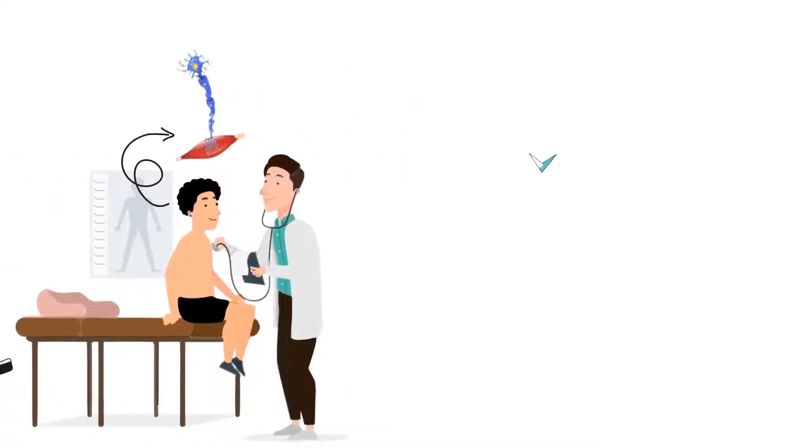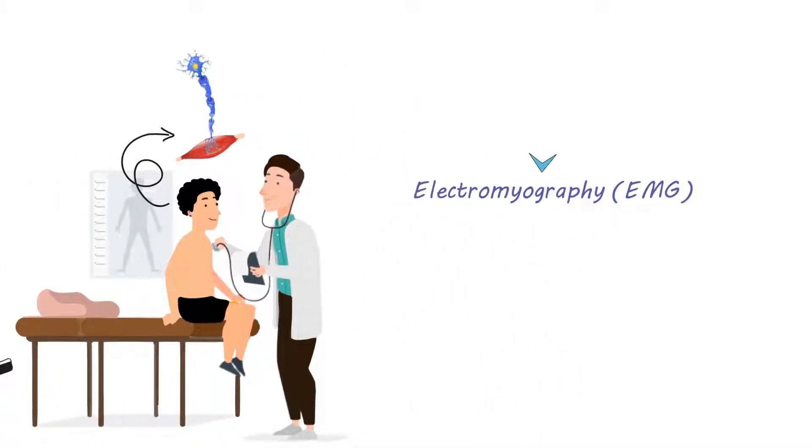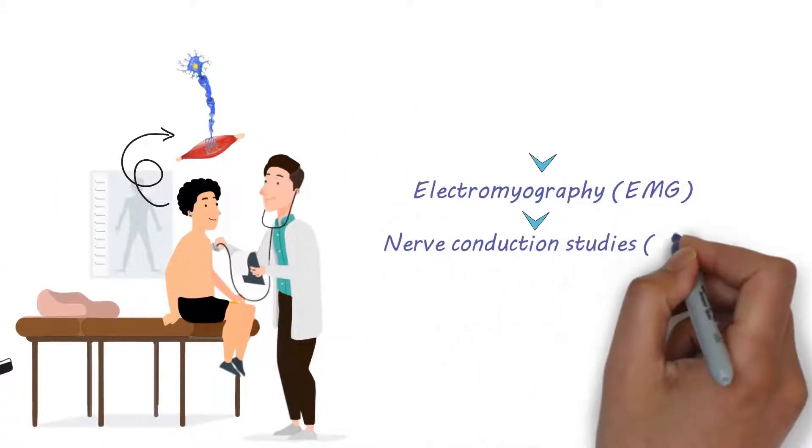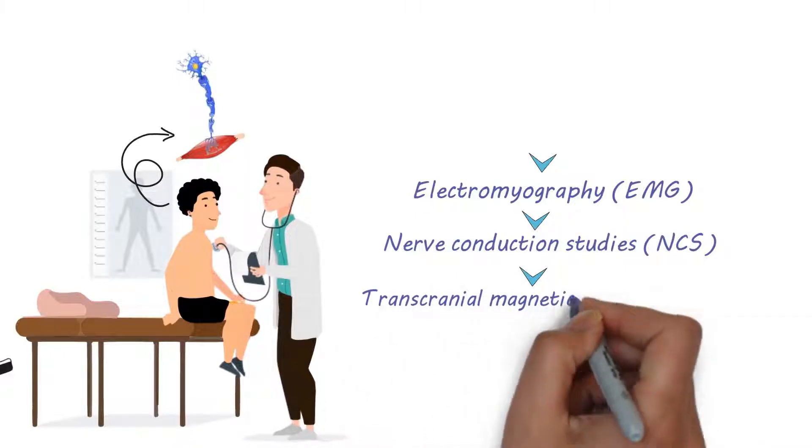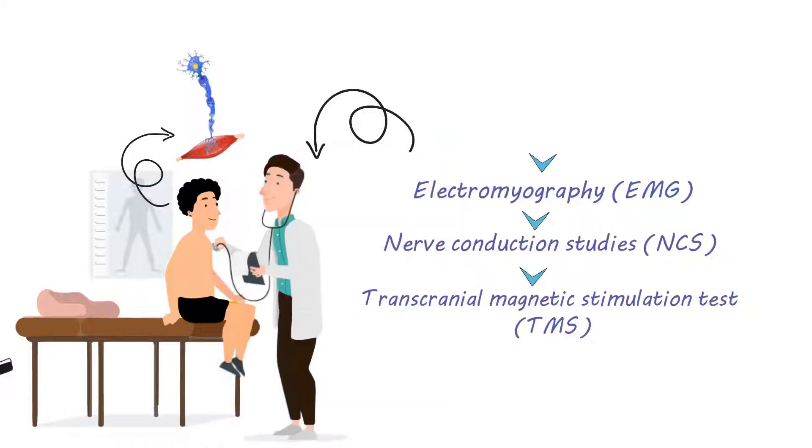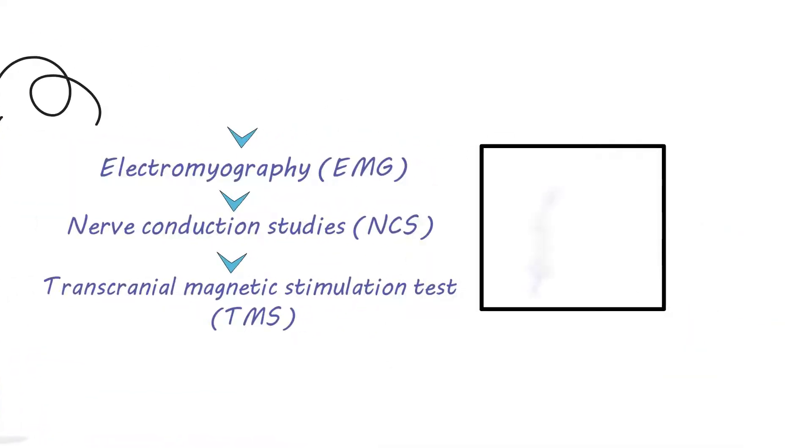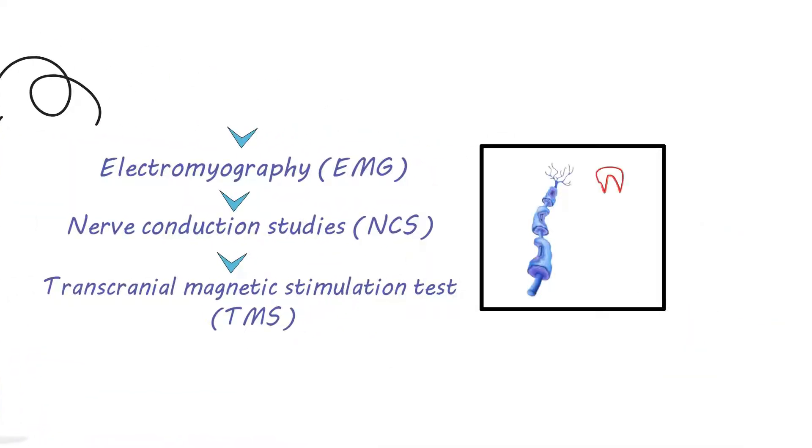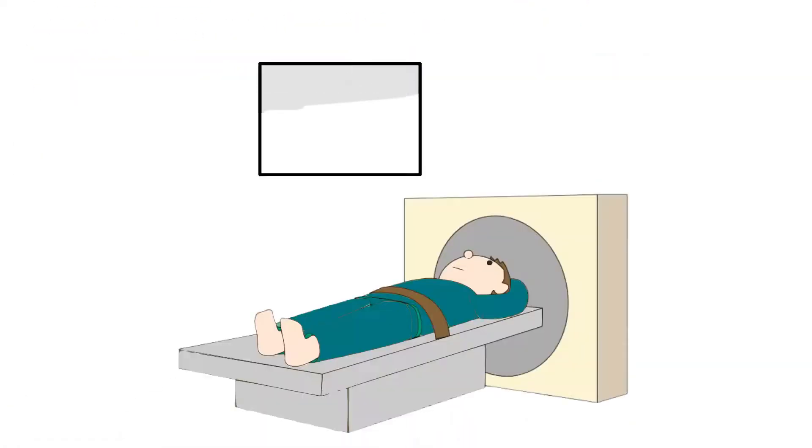Diagnostic tests, such as electromyography, nerve conduction studies, and transcranial magnetic stimulation test may also be used to evaluate nerve and muscle function. These tests can help to detect nerve damage and evaluate the extent of muscle weakness and atrophy. Other tests such as a brain MRI scan may be done to exclude other potential causes of your symptoms.